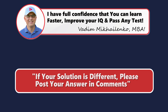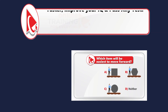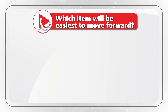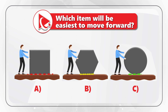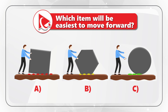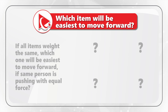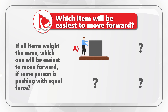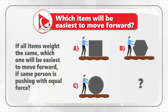If that's not what you got, please make sure to post your solution and rationale in comments so we can all learn. Now I have a question for you to practice your skills. We have three different scenarios of a person moving an object — Choices A, B, and C. If all items weigh the same, which object would be easiest to move forward if the same person is pushing with equal force? Select one out of four possible choices: A, B, C, or D — neither one. When you solve this, please post your answer in comments so I can give you feedback.